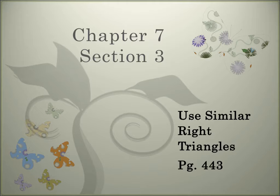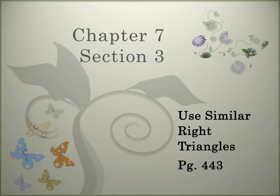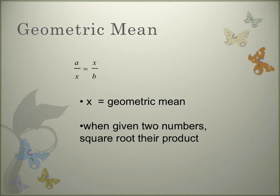This entire chapter is right-triangle based. We first talked about how to identify a right triangle, then the converse, and now we're going to use similar right triangles. There are a couple of theorems we're going to learn about right triangles that you'll be able to apply. We start with something called a geometric mean.